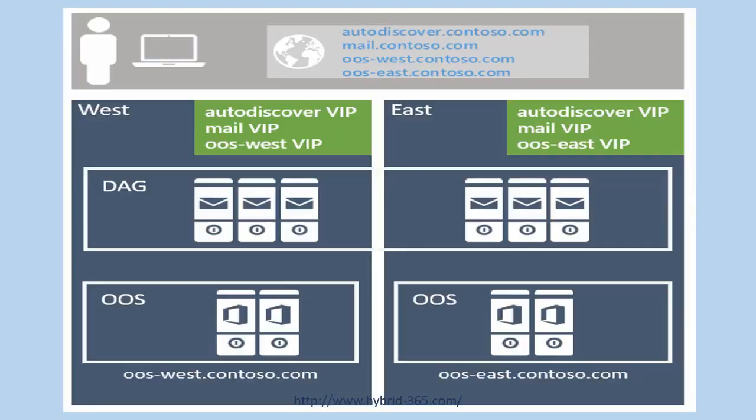As shown in this diagram, we are using the same namespace for both sites named West and East. Irrespective of the location, the users and mailboxes will use the same namespace to access the client access services. For example, autodiscover.conteso.com for autodiscover and mail.conteso.com for web clients.